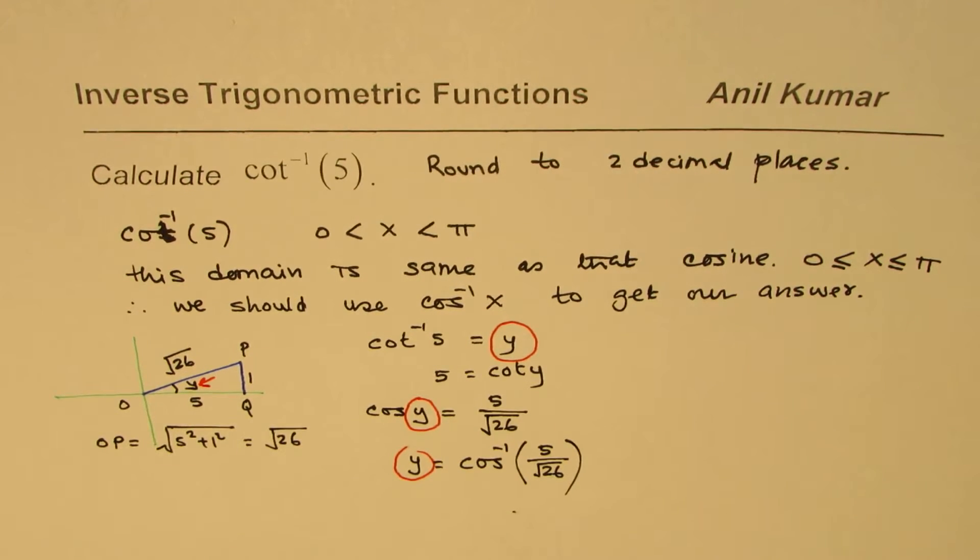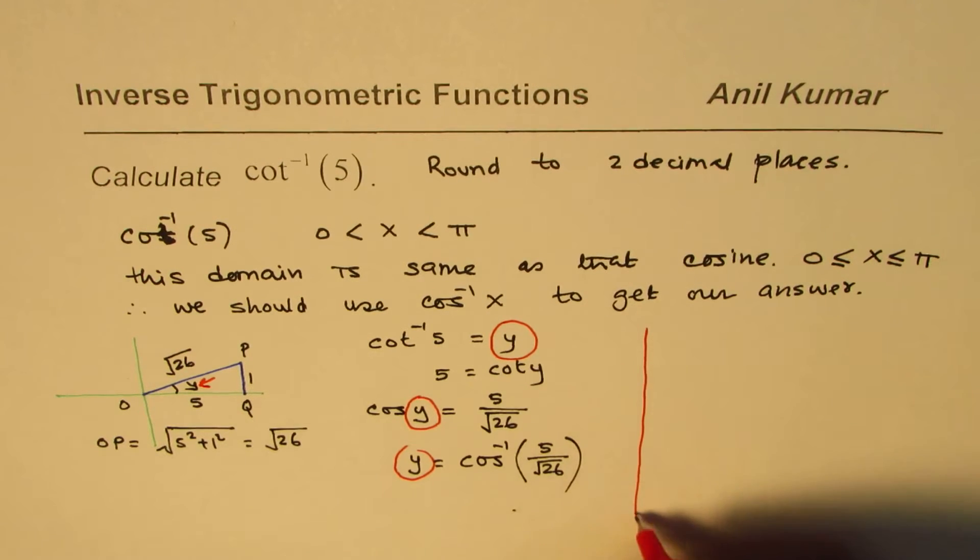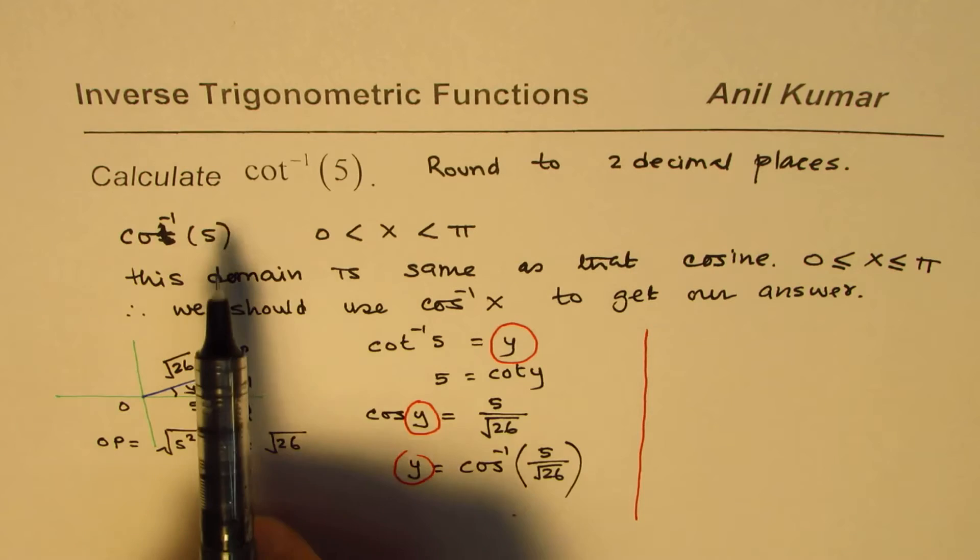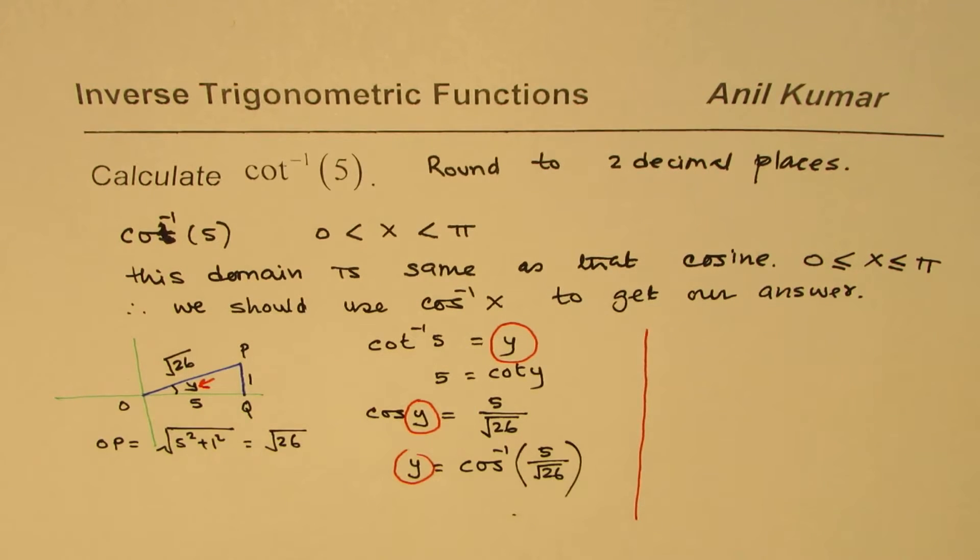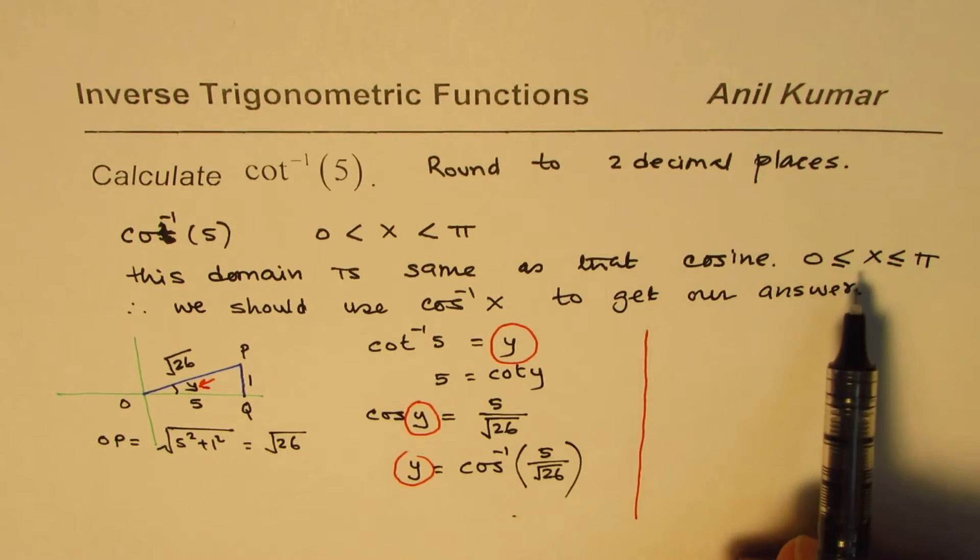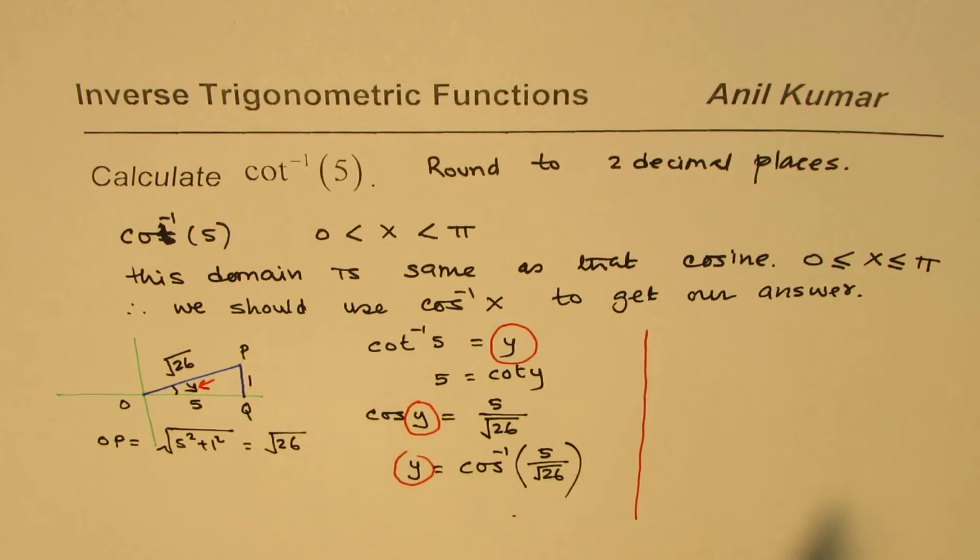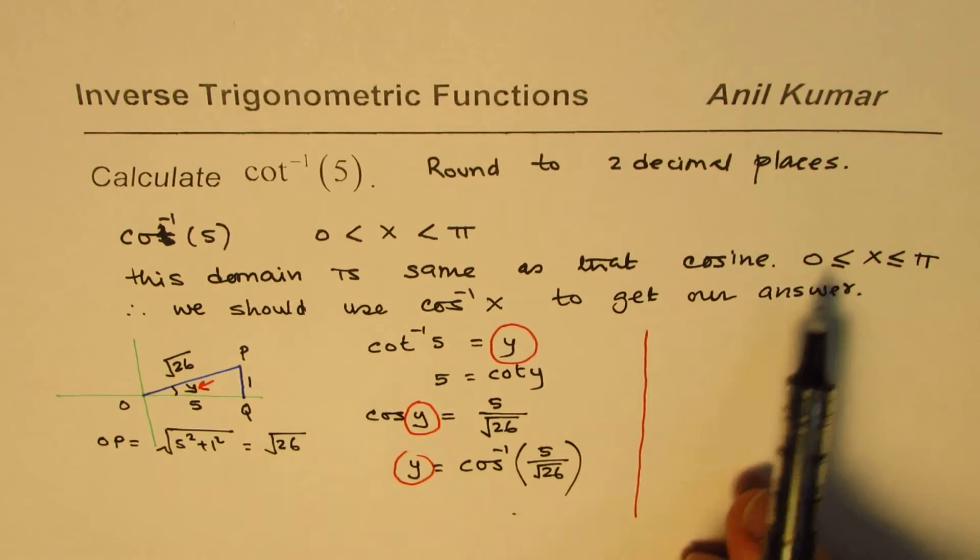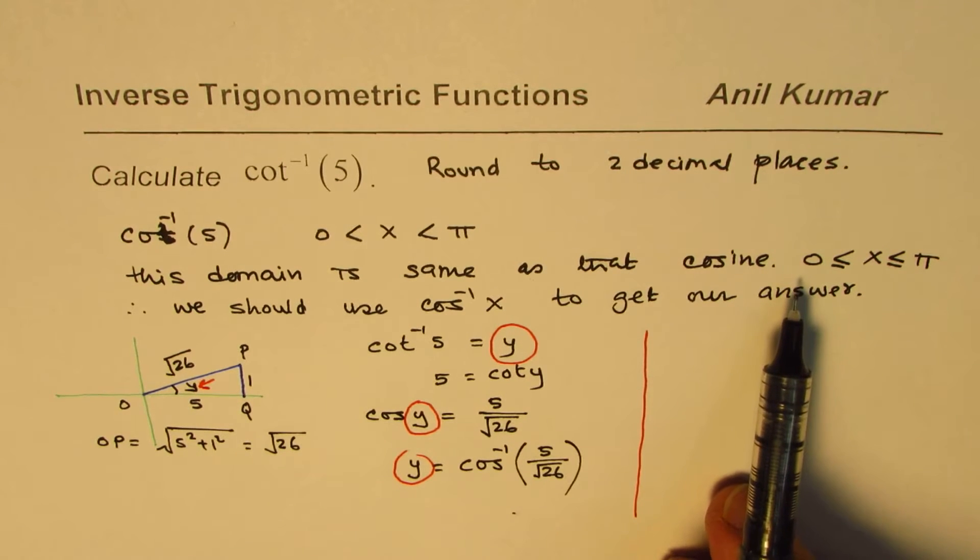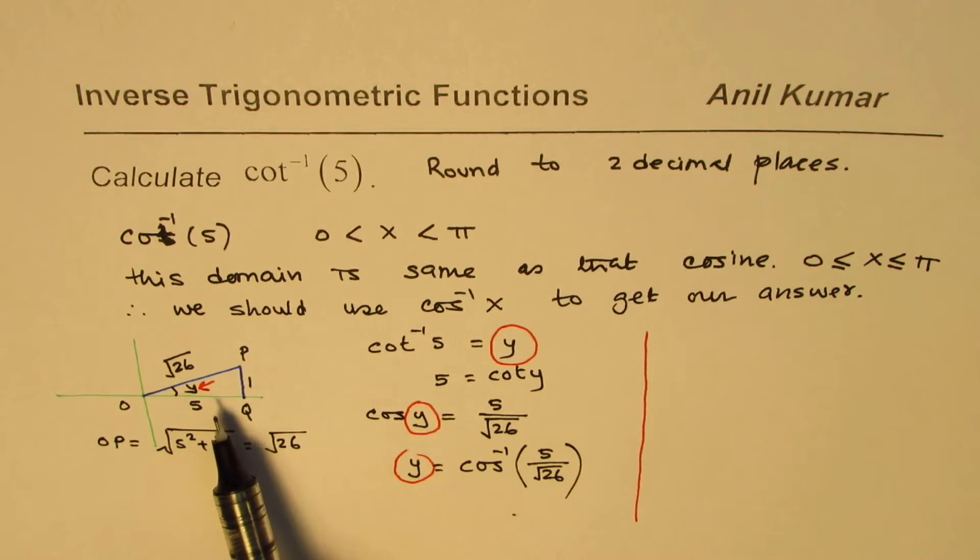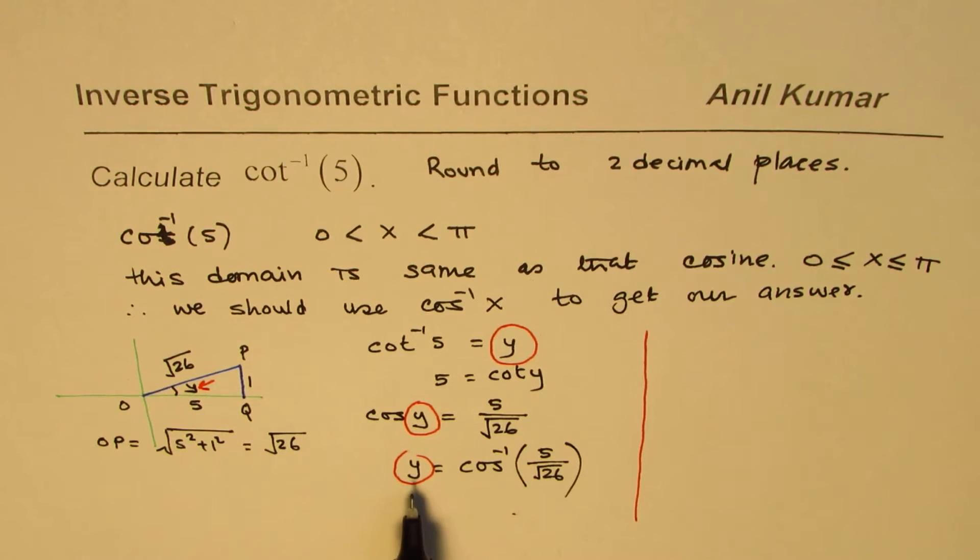Now we can use the calculator to find this. This point is very clear. When you're calculating approximate values for cotangent, secant, or other trigonometric functions, you have to first figure out the domains which match. For cotangent and secant, cosine domain matches, so always use cosine. Now we can write this in terms of cosine and use the calculator.